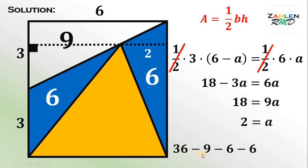So 36 minus 9, minus 6, minus 6, and it is equal to 15. Therefore, the area of this orange region is simply 15. And don't forget the unit, which is square units.